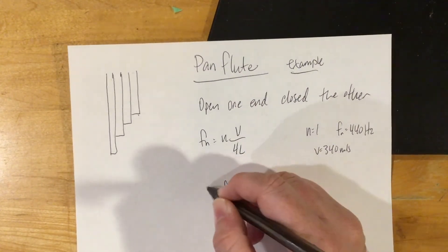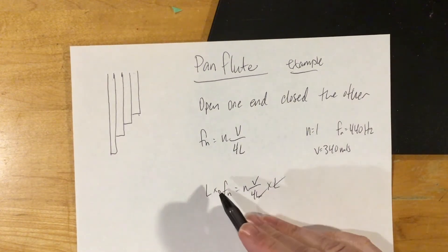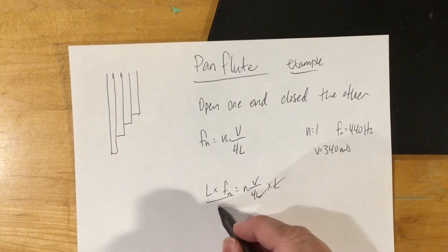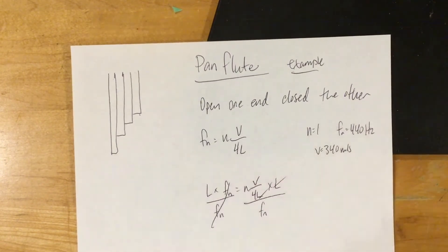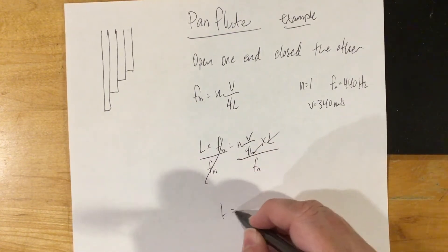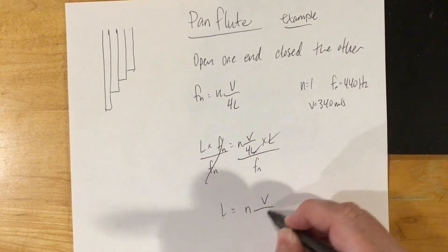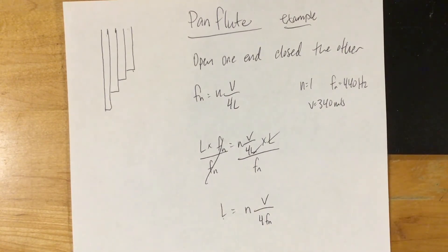You'll multiply both sides by L and that'll bring the L over to the other side. Then you'll divide both sides by f of n, and what that will give you is L by itself on the left-hand side and n v over 4 f of n. So what you'll do in setting that up and calculating it...